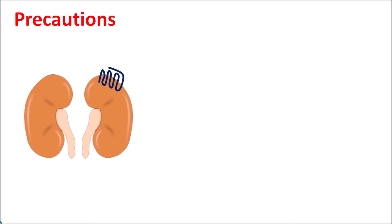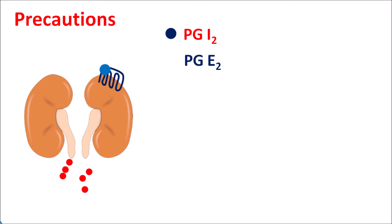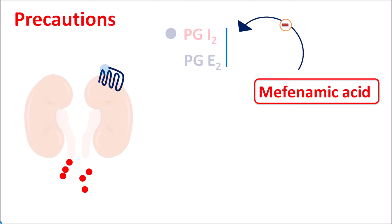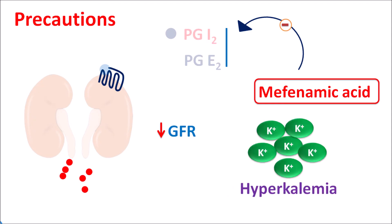Another important role of prostaglandins is on the renal system. Prostaglandins like PGI2 and PGE2 increase renal functionality by acting on their corresponding receptors, increasing glomerular filtration rate and excretion, thereby protecting renal function. Mefenamic acid inhibits the synthesis of these prostaglandins, reducing their action on the renal system, decreasing GFR and excretion. This may result in retention of minerals, particularly potassium, resulting in hyperkalemia, which may lead to cardiovascular complications. Therefore mefenamic acid should be carefully used in patients with decreased renal functionality or renal failure.